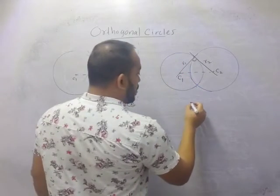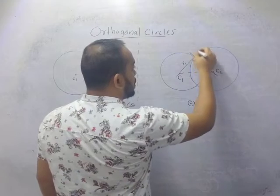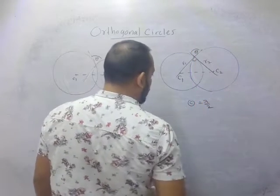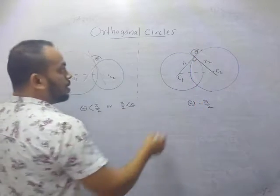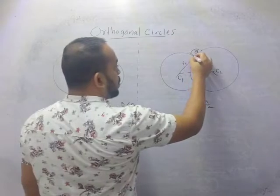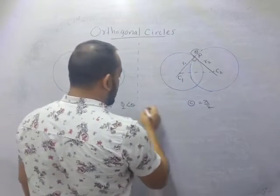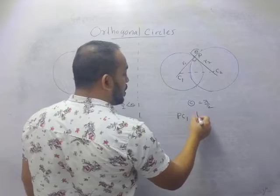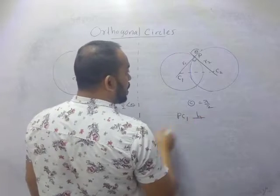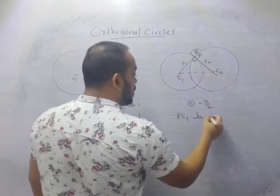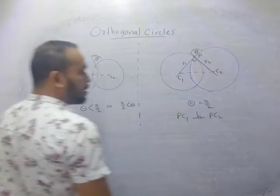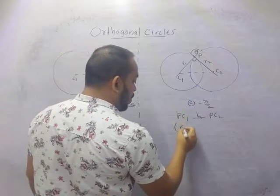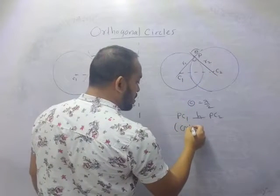In this case theta equals π/2. Now suppose this point is p. In this case, pc1 is perpendicular to pc2. So these two circles are called orthogonal circles.